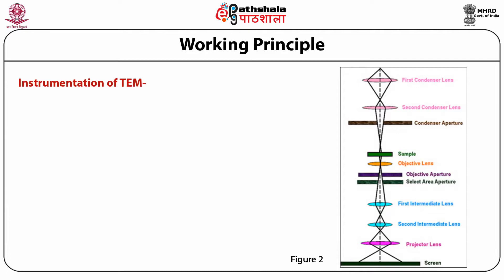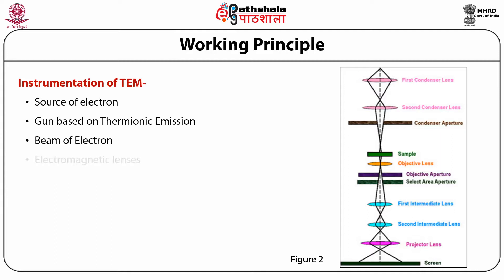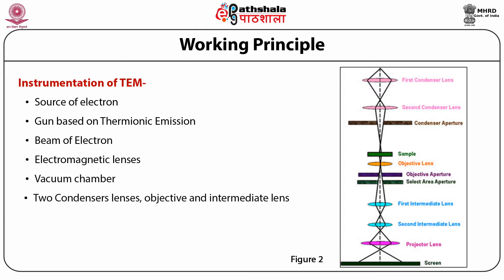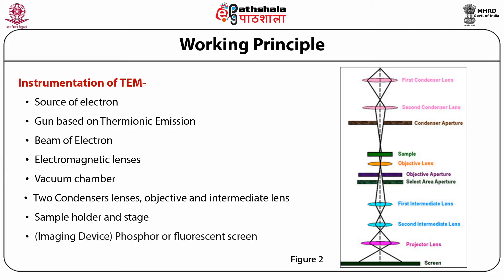We next discuss the instrumentation of TEM. TEM consists of a source of electrons, a gun based on thermionic emission, a beam of electrons, electromagnetic lenses, a vacuum chamber, two condenser lenses, objective and intermediate lenses, the sample holder and stage, along with the phosphor or fluorescent screen which serves as an imaging device, and finally a computer interfaced to the system. The various components are arranged according to their usage as shown in the figure.